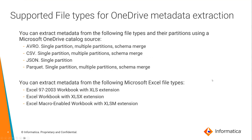You can extract the following file types and their partitions using the Microsoft OneDrive catalog source: Avro, CSV, JSON, and Parquet. You can also extract metadata from a provided list of Microsoft Excel files.